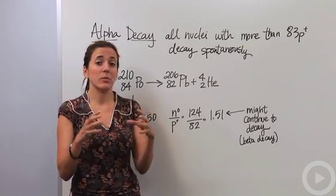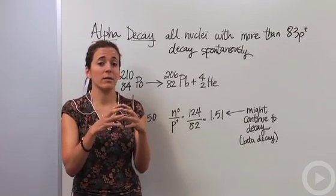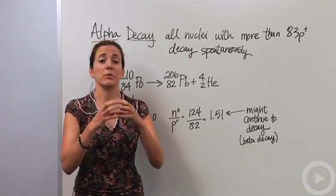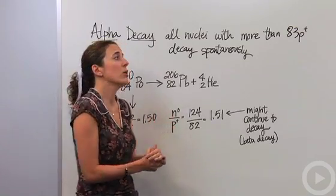Sometimes when too many protons are in the nucleus, it becomes really unstable and it's going to want to release those protons. So when does that happen?